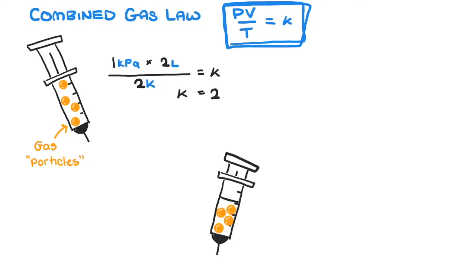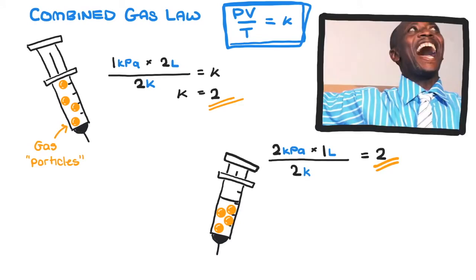Now how about we double the pressure and take measurements of the other conditions? In this case, pressure is now 2 kPa, volume is half because of Boyle's law, and temperature is also 2 because of Charles's law. K still equals 2.